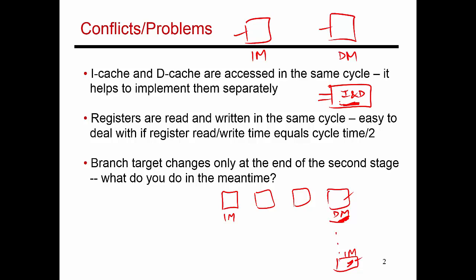A second possible problem is that registers are being read and written to at the same time, and this is a problem you cannot really avoid. The solution used here is that register read takes half a cycle and register write takes half a cycle. The first half of the cycle is used to perform the write, and the second half of the cycle is used to perform the reads. This gives a register file with one write port and two read ports.